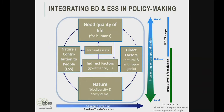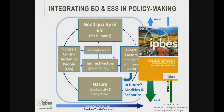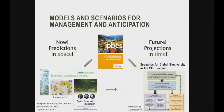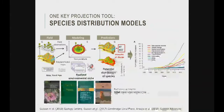The IPBES framework has become central and is increasingly important in policymaking in most countries. It links direct factors to nature, which then provides contributions to people. If we want to make projections, we need models and scenarios to anticipate change. You can make predictions in space to support systematic conservation planning, but also predictions in time to know what will happen with future climate change or land use change.